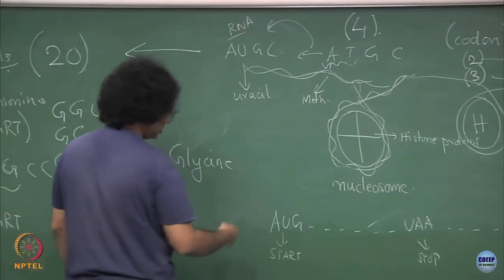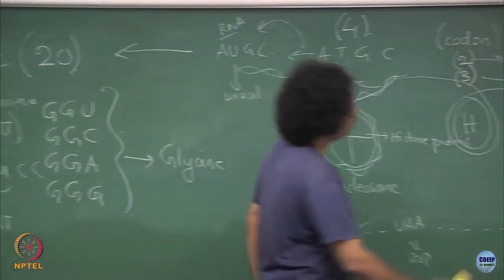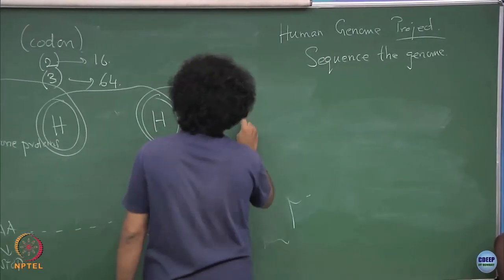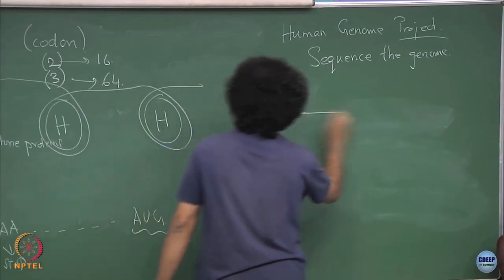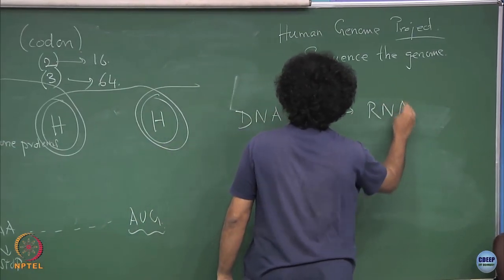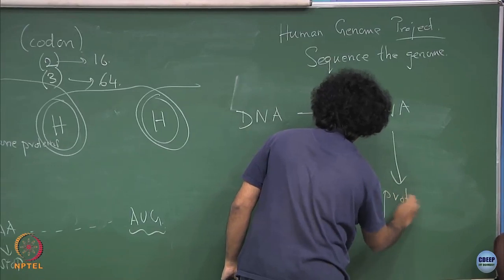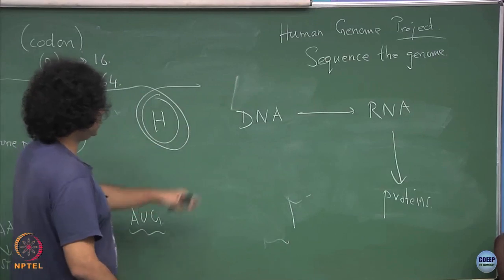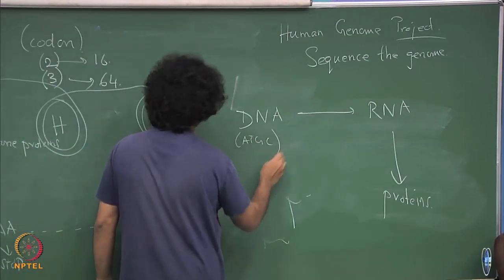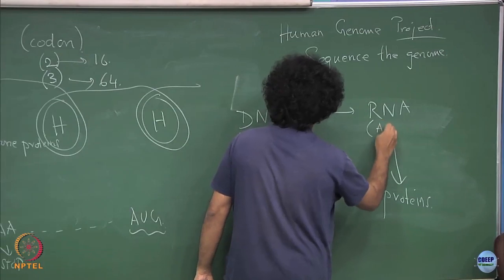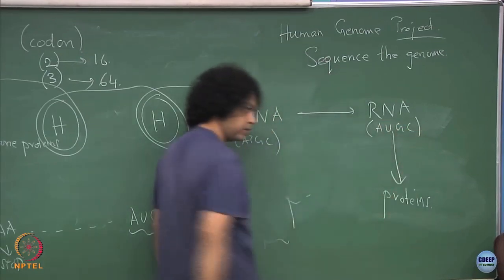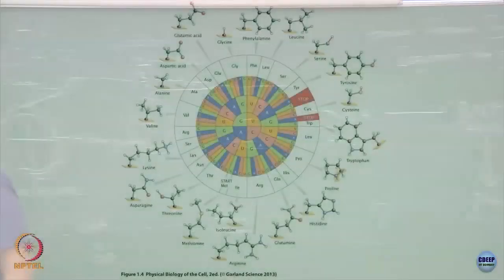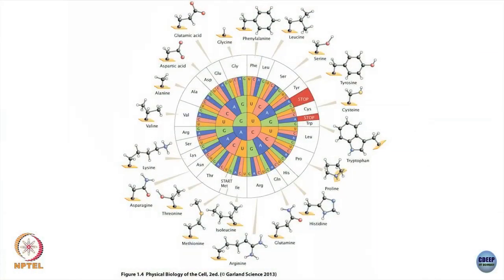So what is the central dogma? You have DNA going to RNA going to proteins. DNA has A, T, G, C; the RNA has A, U, G, C; and that gets read in 3-codon combinations to produce the appropriate amino acid and then the protein.